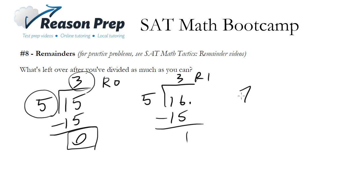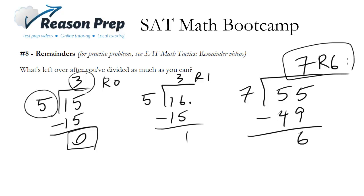What about 7 into 55? Well, 7 goes into 55... let's see, 7 times 7 is 49, 7 times 8 is 56, so it's going to have to be 7. 7 times 7 is 49, we subtract, we're left with 6. 7 can't go into 6, so this is just remainder 6, and that's it.